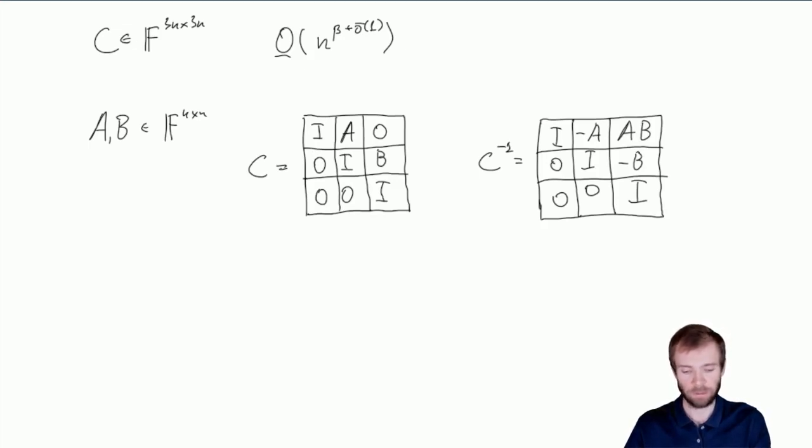So we take matrices A and B, we form this matrix of order 3n. Then we employ the algorithm for inversion of these kinds of matrices. And then we just look at the top right corner of this inverted matrix, and we see the product of A and B.